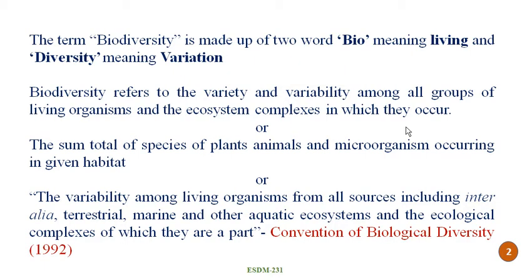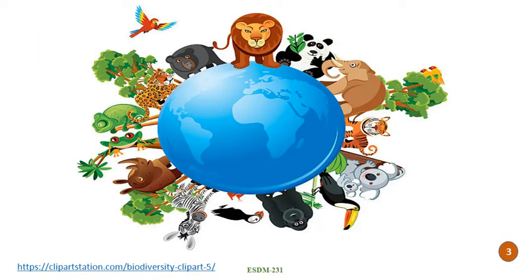The term biodiversity is made up of two words. First is 'bio' meaning living things and 'diversity' meaning variation or varieties. So biodiversity refers to the variety and variability among all groups of living organisms and the ecosystem complexes in which they occur. It is alternatively defined as the sum total of the species of plants, animals and microorganisms occurring in a given habitat. According to the Convention on Biological Diversity in 1992, biodiversity is the variability among living organisms from all sources including terrestrial, marine and other aquatic ecosystems. In simple words, biodiversity is nothing but the diversity of life forms present on earth.